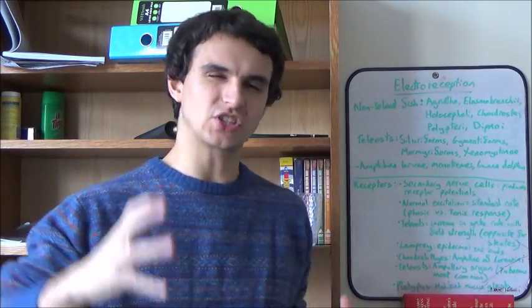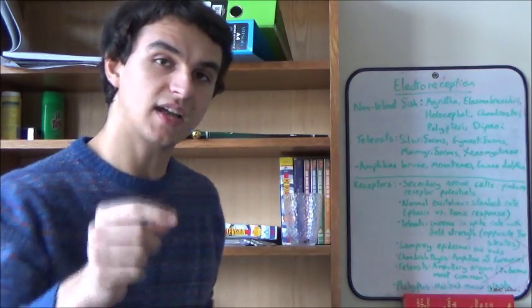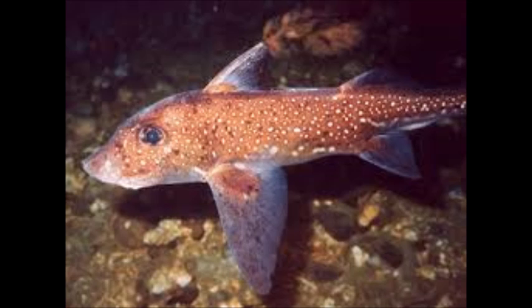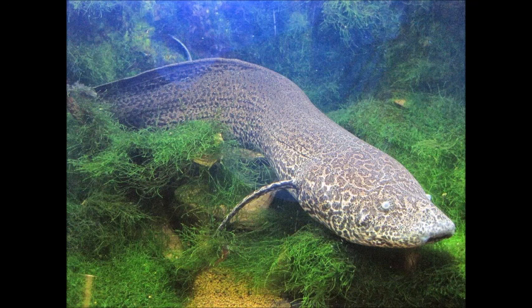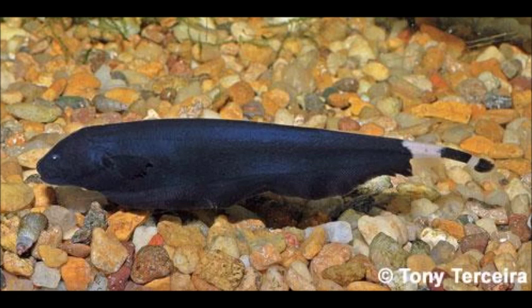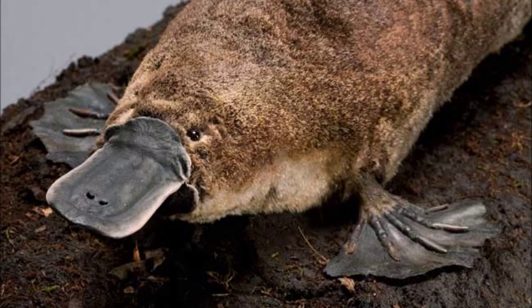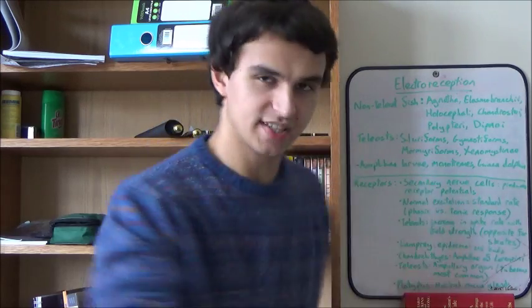Let's look at some pictures of animals then. Who actually uses electroreception? Most fish that use it aren't actually teleosts. The non-teleost groups are the Agnatha, Elasmobranchii, Holocephali, Chondrostei, Polypteri, and Dipnoi. The teleost groups are the Siluriformes, Gymnotiformes, Mormyriformes, and Xenomystinae. Some amphibian larvae can do this too. Mammals include the Monotremes—the platypus and echidna—and finally, the Guyana dolphin.